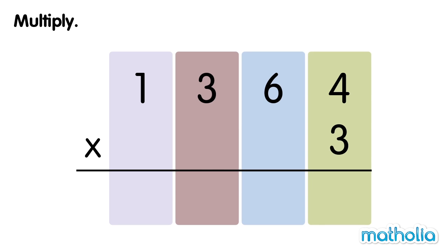Let's multiply 1,364 by 3. Start by multiplying the 1s. 3 times 4 ones equals 12 ones. Regroup 12 ones into 1 ten and 2 ones.